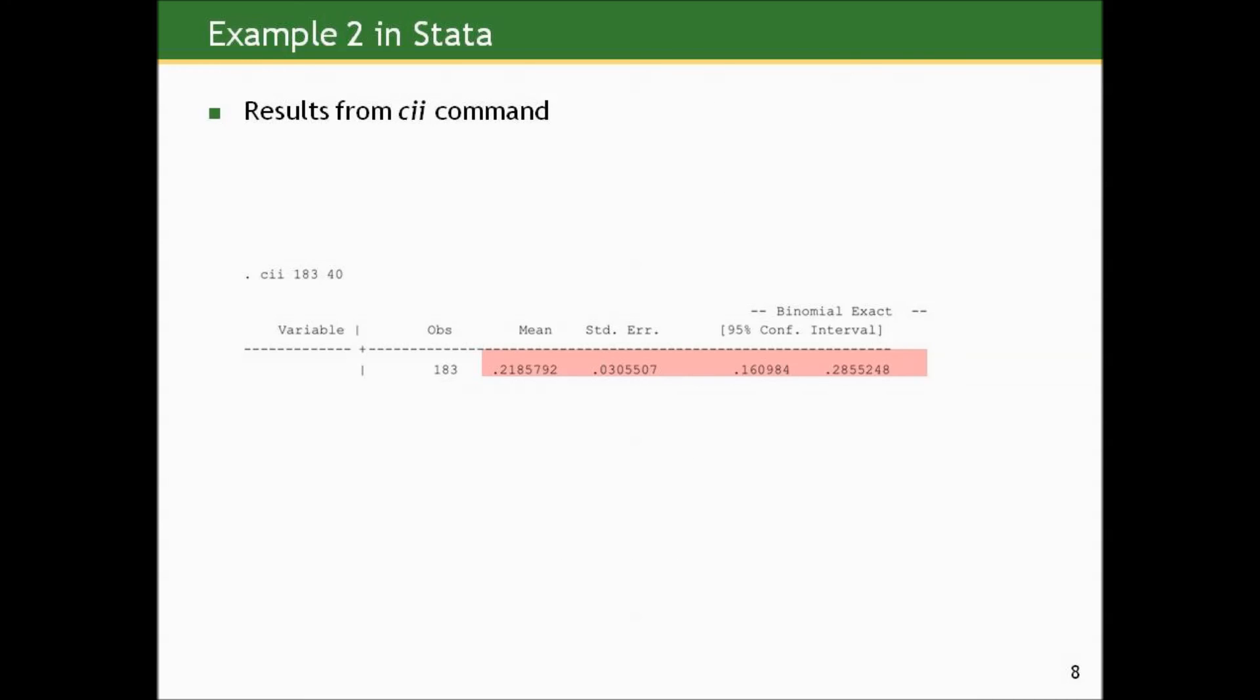So let's just see how using the CII command would give us what it would do in this example. And if we type CII 183 40, the exact confidence interval that Stata gives us matches up pretty well with our hand computed.